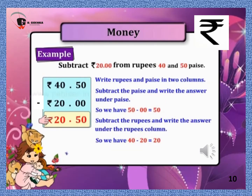Now let us move forward towards subtraction of money. Subtract ₹20 from ₹40 and 50 paise. We write rupees and paise in two different columns separated by a dot. First, subtract the paise column: 50 paise minus 0 paise equals 50 paise. Then subtract the rupees column: 40 minus 20 equals ₹20. So our answer is ₹20 and 50 paise.